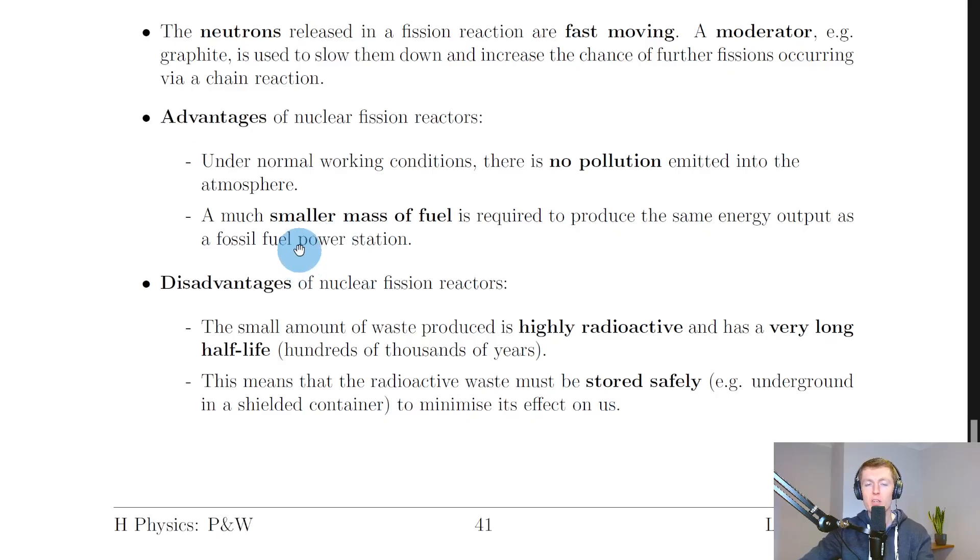Going back to the notes now, we'll finish by looking at some advantages and disadvantages of nuclear fission reactors. So some advantages are that under normal working conditions, there is no pollution emitted into the atmosphere. And we say that a much smaller mass of fuel is required to produce the same energy output as a fossil fuel power station. So the way I like to think about that is that a small mass of fuel, such as one little pellet of uranium, can produce the same amount of energy as a huge lump of coal. So it's much more fuel efficient in terms of the energy produced for the amount of fuel that you're using.